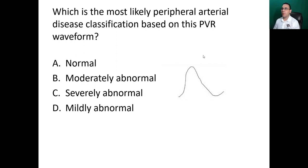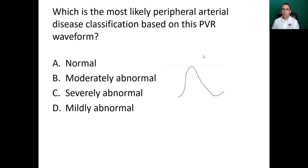Which is the most likely peripheral arterial disease classification based on this PVR waveform — normal, moderate, severe, or mild? Look at the amplitude, the peak, the upstroke, and the downstroke. The answer is mildly abnormal. There's no dicrotic notch, so it cannot be normal. The amplitude is still decent, indicating mild disease.